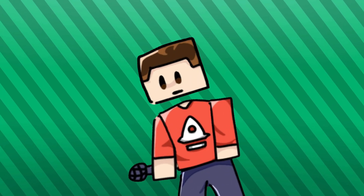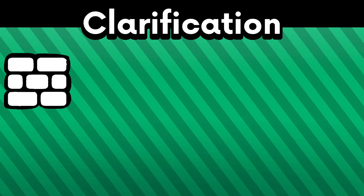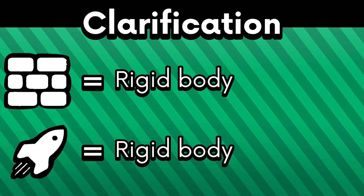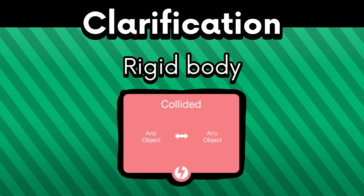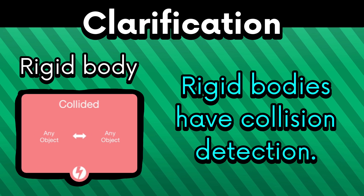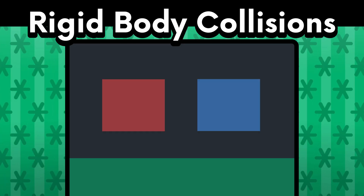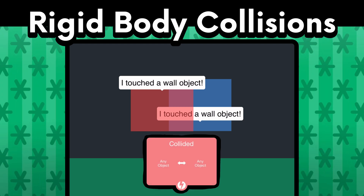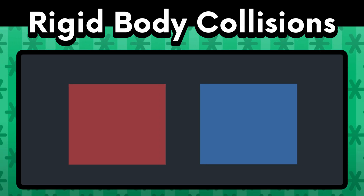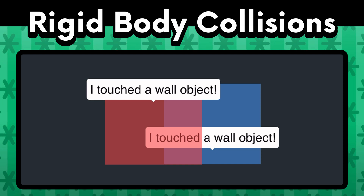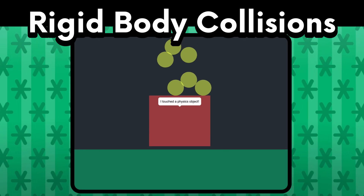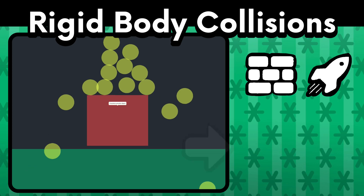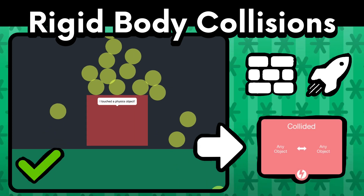Here's where people get confused. Since wall objects and physics objects are both rigid bodies, they work with the collide behavior, meaning they can detect collision. A wall object can collide with another wall object and trigger the collide behavior, even if moving them together doesn't seem to do anything visible. You can have any combination of wall and physics objects colliding together to trigger this behavior.